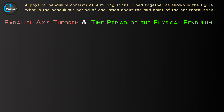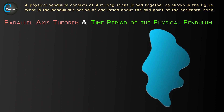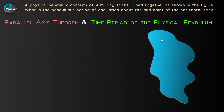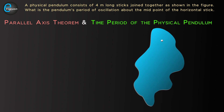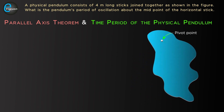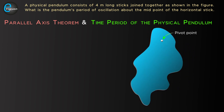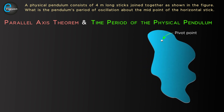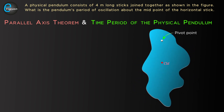Now let's derive the formula for the time period of a physical pendulum. Suppose we have a rigid body with no defined shape. Making a hole at a point, we hang it on the wall using an iron nail and oscillate it about this pivot point. The body undergoes simple harmonic motion and becomes a physical pendulum, also known as a compound pendulum. The distance of the pivot point from the center of mass is l.